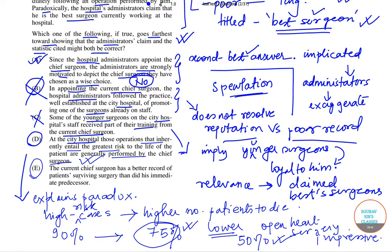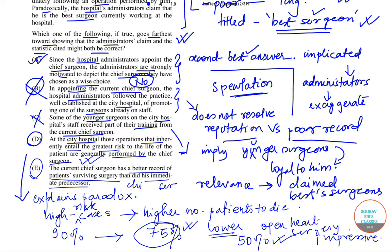Before confirming D, we must also look at option E. E says that the current chief surgeon has a better record of patients surviving surgery than his immediate predecessors. However, the passage compared the chief surgeon's current performance to the current staff, not to the previous staff or previous chief surgeon, which might have been a little helpful, but that is not the case. So we will also eliminate E.